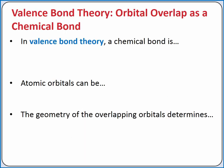According to valence bond theory, a chemical bond is the overlap of two half-filled atomic orbitals on neighboring atoms and spin pairing of the two valence electrons. The atomic orbitals can be the standard s, p, d, and f atomic orbitals from our quantum mechanical model, or we can create hybridized atomic orbitals. The geometry of the overlapping orbitals determines the shape of the molecule.